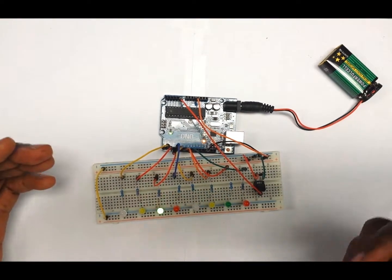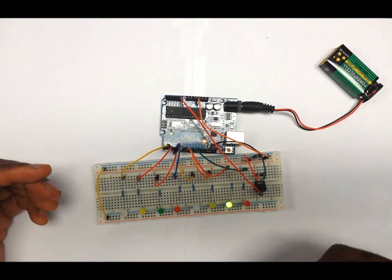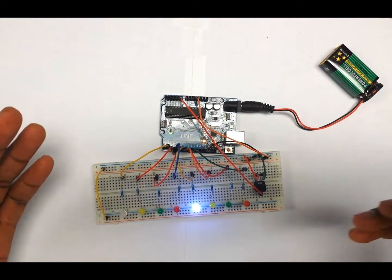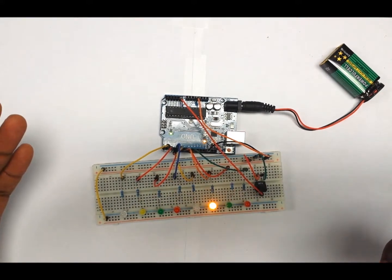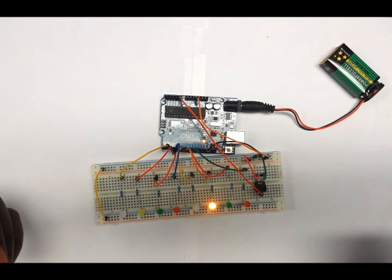This is how you use a potential meter to control the rate at which your LEDs can turn on and off. That's all for the flowing LED project. We'll see you in the next project. Thank you.